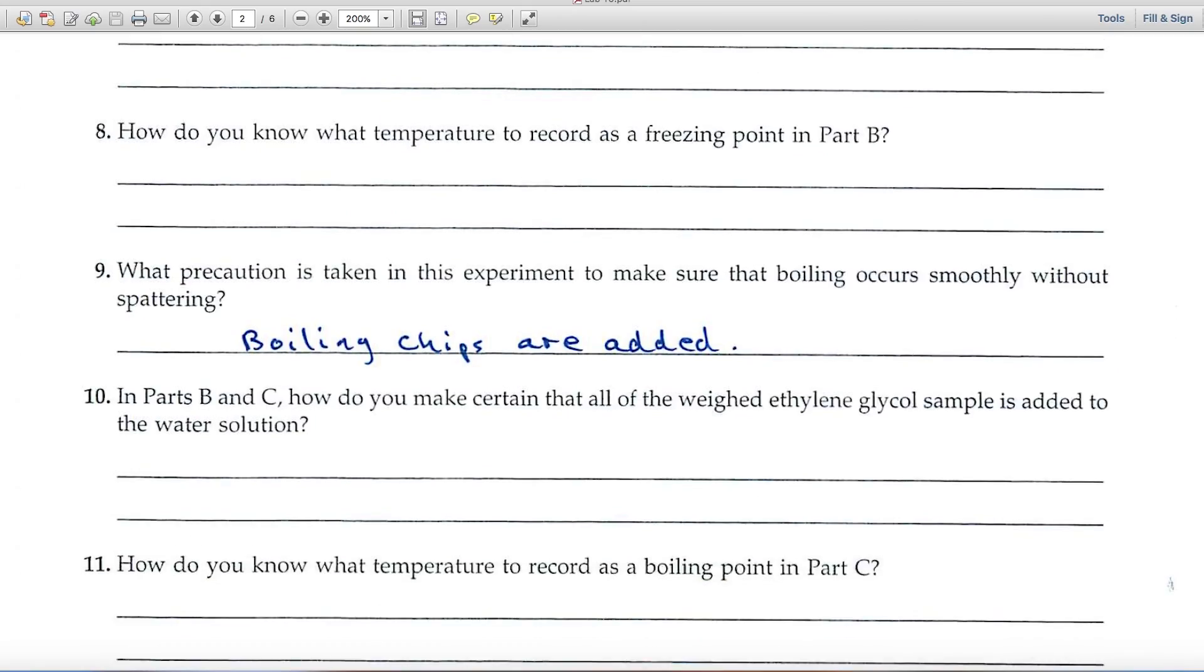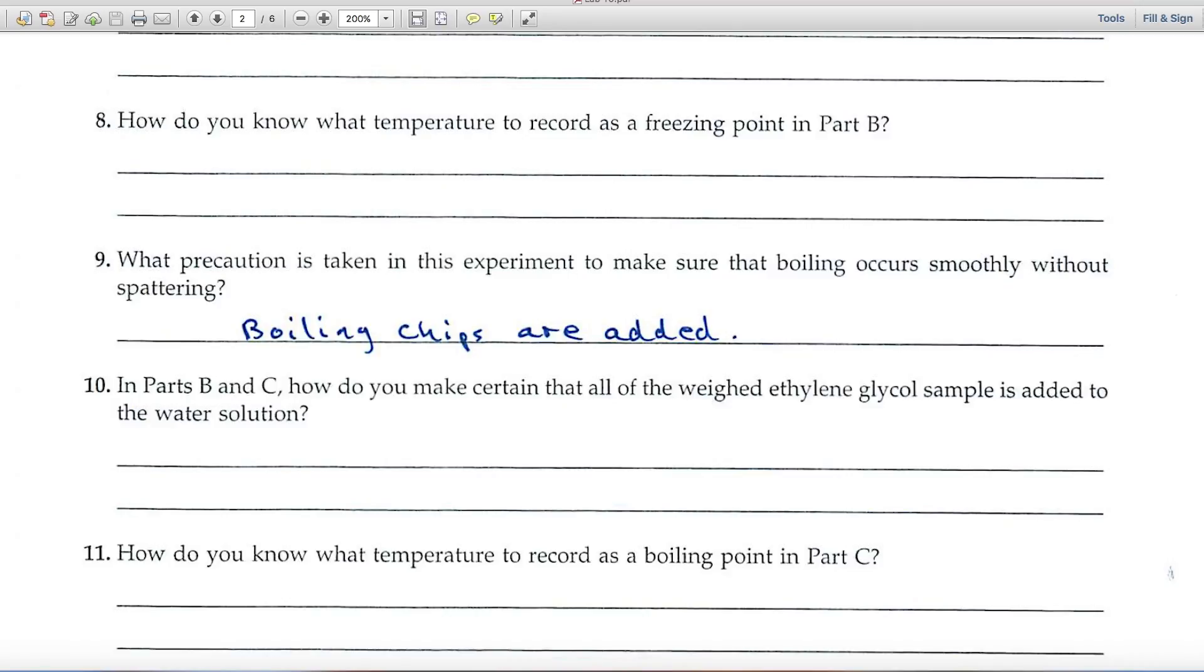A number of questions here. I think they're pretty straightforward. Here's a little tip for number nine. The answer is boiling chips are added. Boiling chips are little stone pieces about the size of a pea, and they serve as nucleation sites for the start of bubbles, so that boiling doesn't occur explosively, but sort of gently.